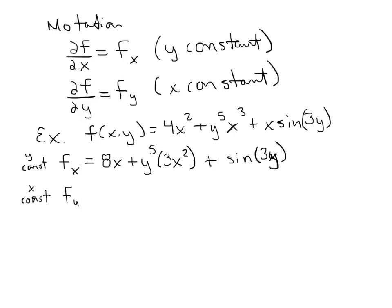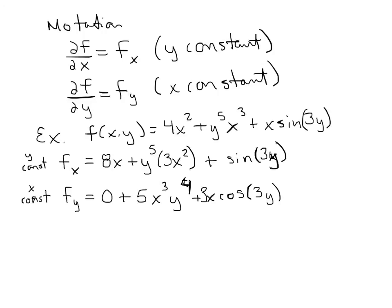Now let's find the partial of f with respect to y — this is a separate problem where x is constant. For the first term, 4x² is a constant, so its derivative is 0. For the second term, x³ stays as a constant, the 5 comes down in front, and we subtract 1 from the exponent of y, giving 5x³y⁴. For the third term, x is constant, the derivative of sine is cosine, and we multiply by 3 from the chain rule, giving 3x·cos(3y).